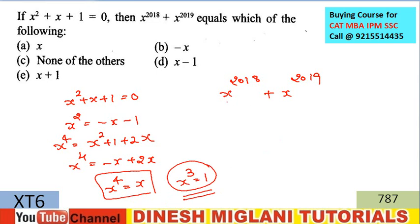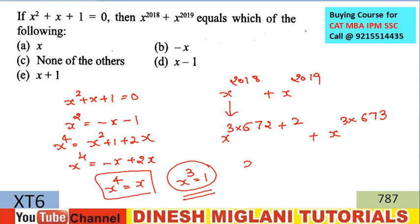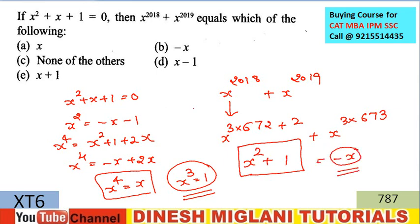Since x³ = 1, I simplify x^2018 + x^2019. Dividing 2018 by 3: 3 × 672 = 2016, remainder 2. So x^2018 = x^(3×672) × x² = 1^672 × x² = x². Similarly, 2019 = 3 × 673, remainder 0, so x^2019 = 1. Therefore x^2018 + x^2019 = x² + 1. Since x² + x + 1 = 0, we know x² + 1 = -x. So the answer is B: the value equals -x.